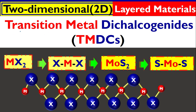Let us discuss transition metal dichalcogenides. It is a two-dimensional material, sometimes called a layered material. It is composed of a very simple formula MX₂. M is a transition metal, X is a chalcogen atom, but here we use two chalcogen atoms — that is why it is called dichalcogenides.